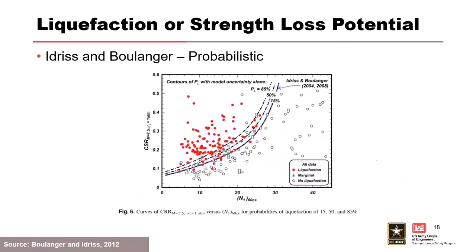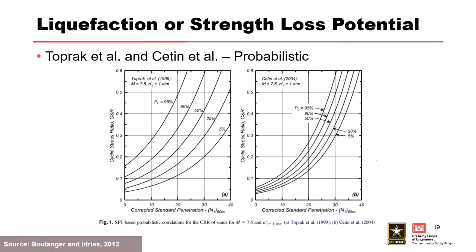There are also probabilistic versions for evaluating liquefaction potential, using the same database but looking at the probability that liquefaction may occur. One example is Boulanger and Idriss published in 2012, which uses correlations they developed earlier and puts them in a probabilistic framework. Other examples include Topak et al. 1989 and Seaton et al. 2004. These are all different ways of looking at the same data with different understandings — tend to look for the most recent one applicable to your situation.